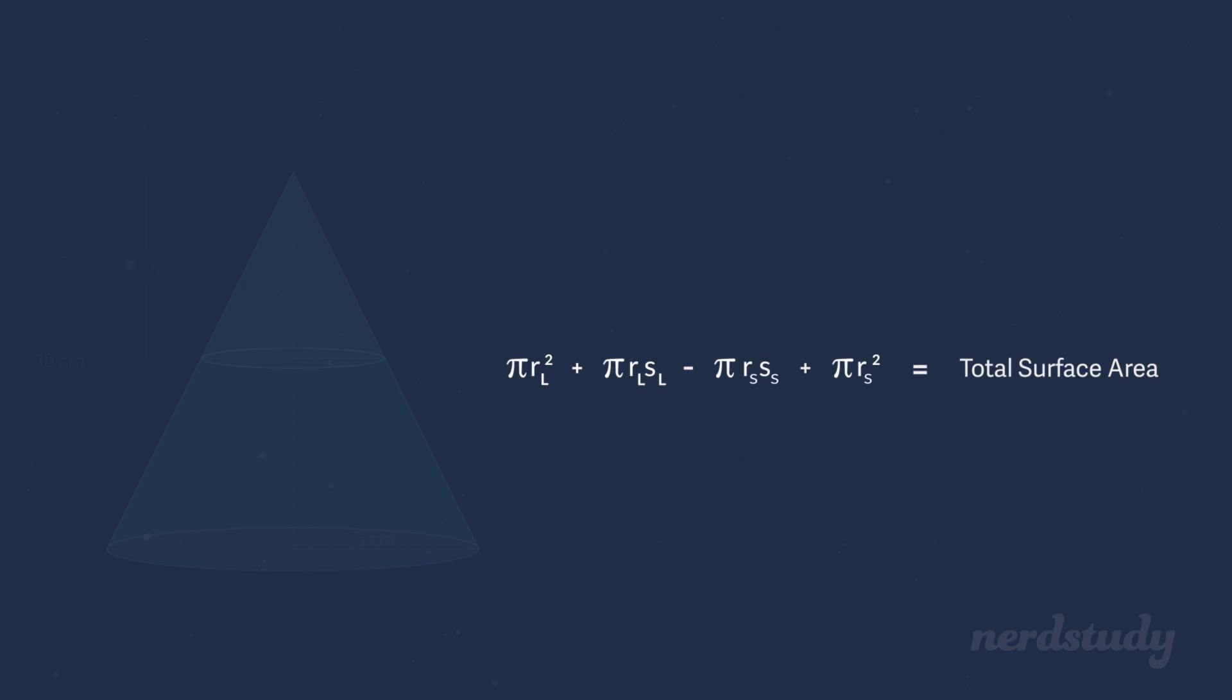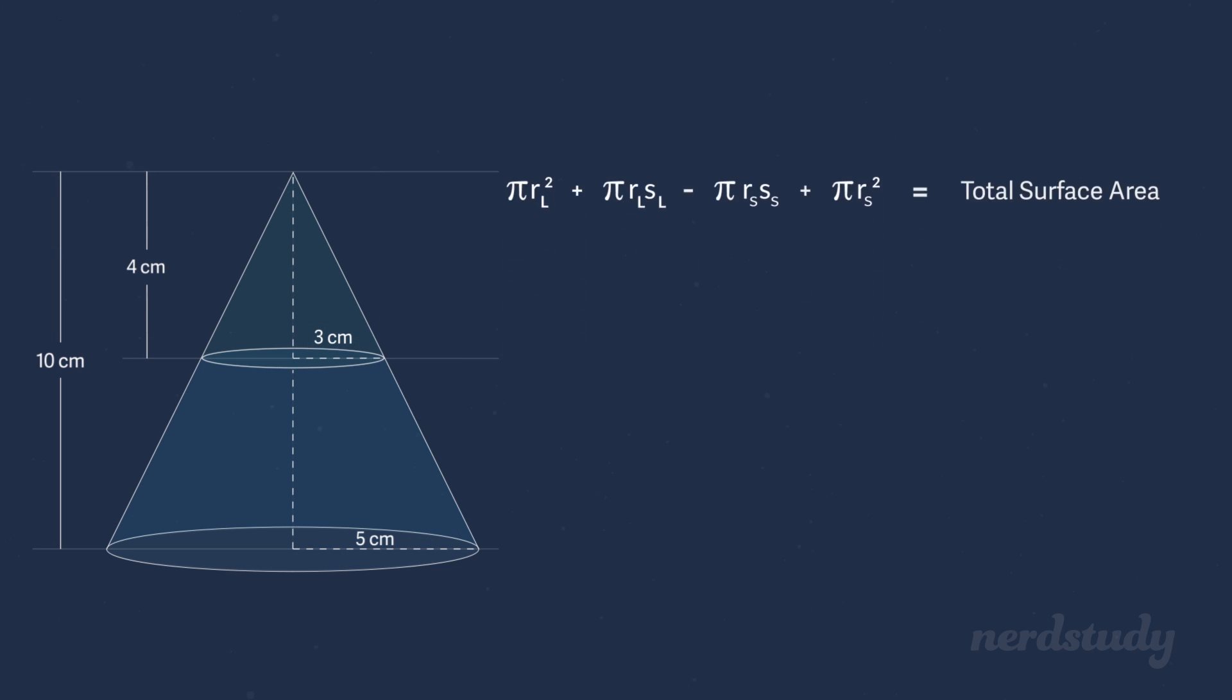And I'll come to realize how important this is for doing well in university and beyond. Good. Well, let's pull up the dimensions to get a better idea of what we're working with. So we are given the radius for both the large cone and the small cone. Let's plug that in first. If we simplify the squares and rearrange it, we have 25 times pi plus 5 times pi times s large minus 3 times pi times s small plus 9 times pi. Okay, let's figure out the slant heights now.